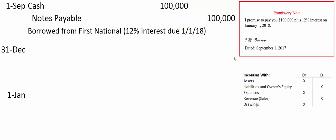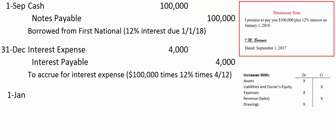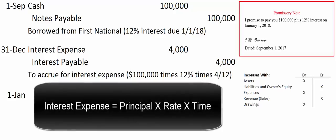We're not going to write the check until January 1st, but we want that interest expense in the year 2017 because that's when we incurred it. As of December 31st we owe $4,000. The principal is $100,000 times the rate of 12% equals $12,000 for a full year's interest. Divide by 12 to get one month's interest: $1,000. We owe interest for September, October, November, and December — four months — so four times $1,000 gives us $4,000 worth of interest expense.